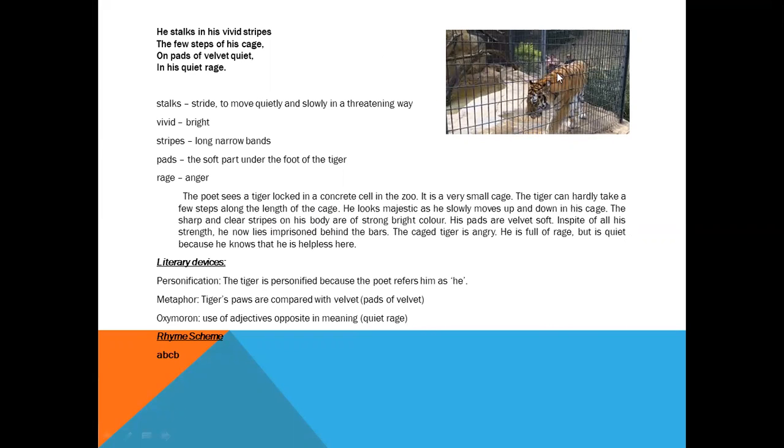The poet here has shown the picture of a tiger who is behind the bars. Stalks means striding, to move quietly and slowly in a threatening way. Vivid means quite bright or clear, and stripes mean that you can see on his body, the long narrow bands. The pads mean the foot sole, and rage here means anger.